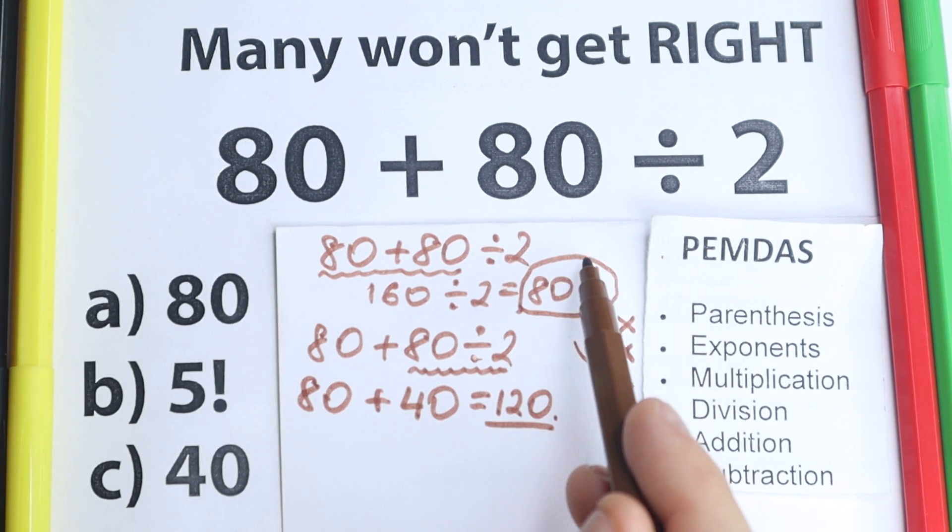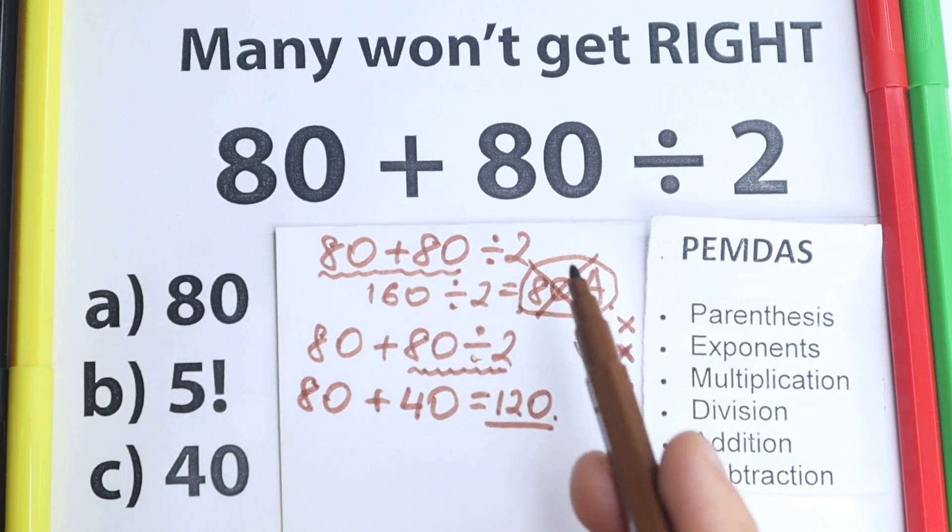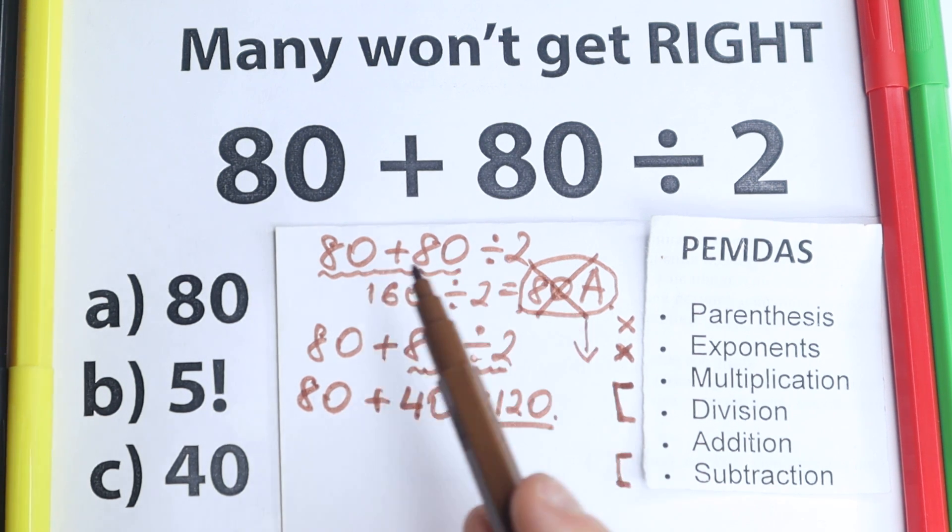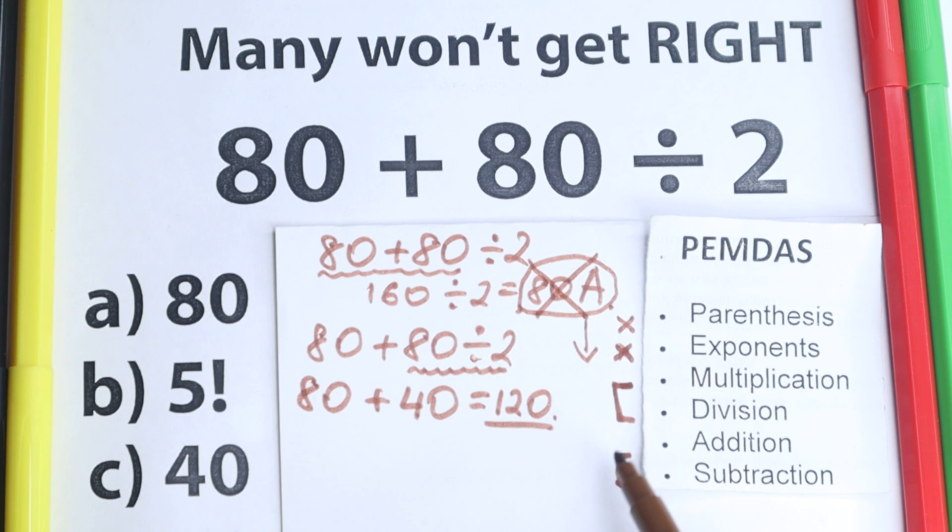And right now I'm going to tell that this is absolutely incorrect answer because this answer is not according to order of operation. It looks like from left to right, we don't care about addition, multiplication, division, so we just go from left to right, but we need to know about order of operation.